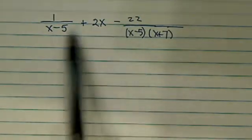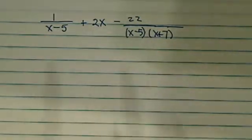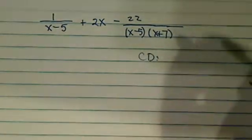In order to add the polynomials, here's the three terms, we need to find the common denominator, which is called CD.